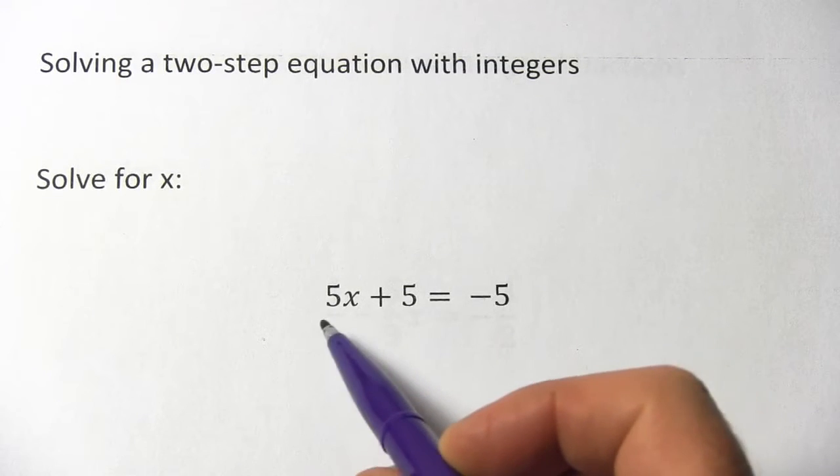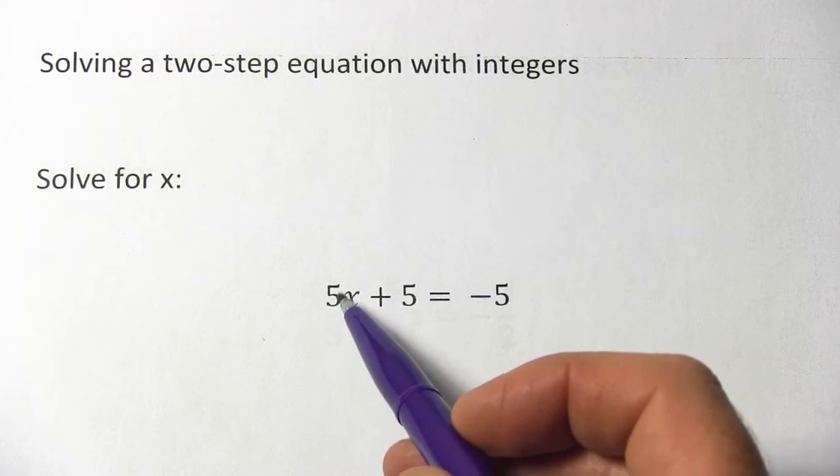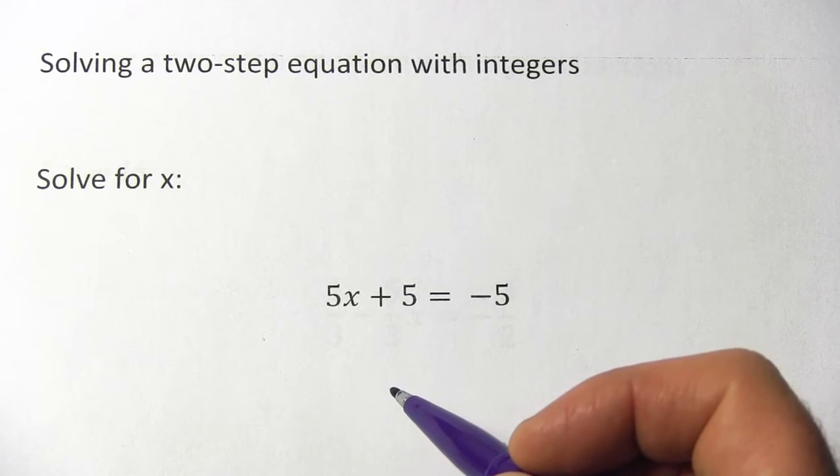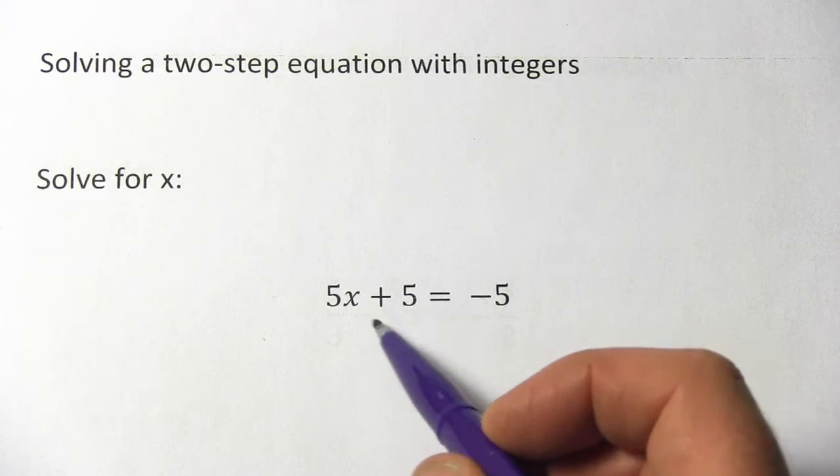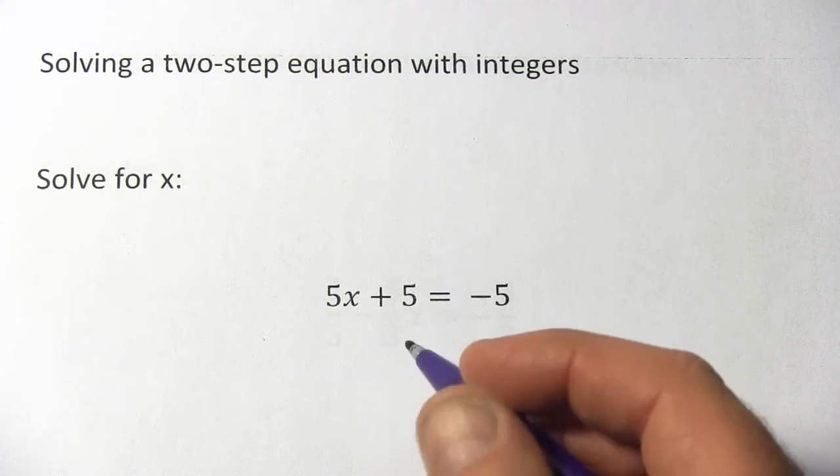You'll notice here a couple of things are being done to the x. We have a plus 5 and we have this 5 that's multiplied by x. We need to undo both of those. And the thing to do is to undo the addition first and then worry about the multiplication here.